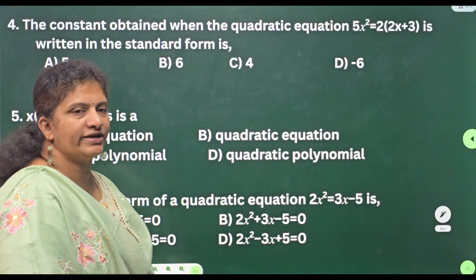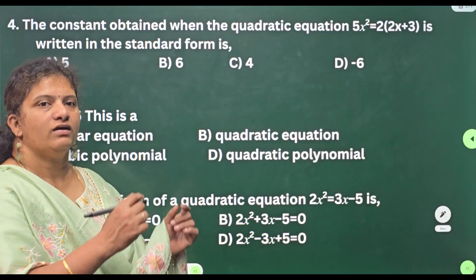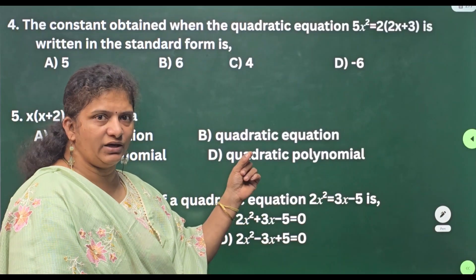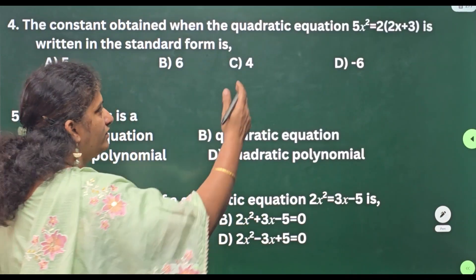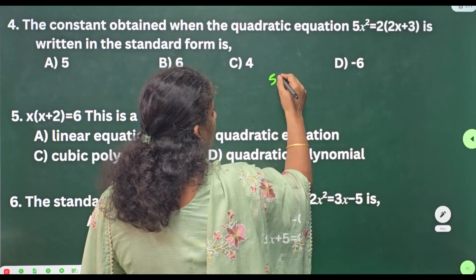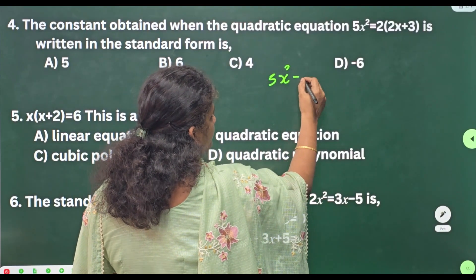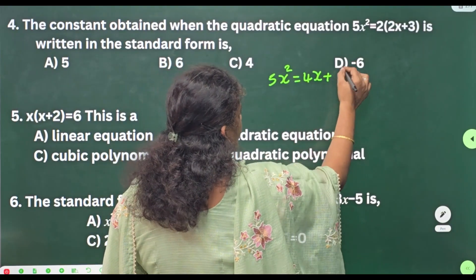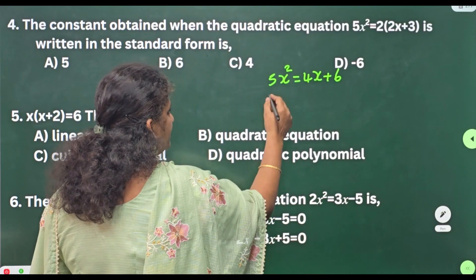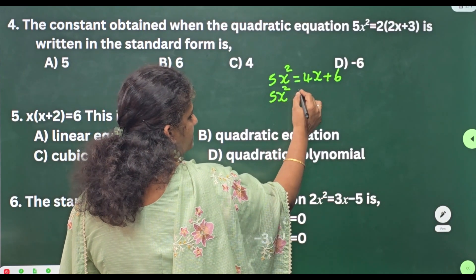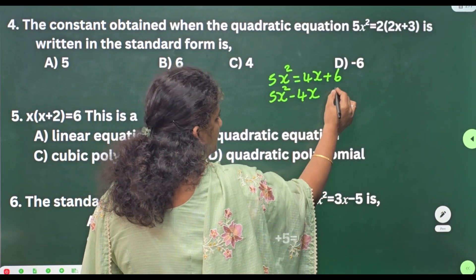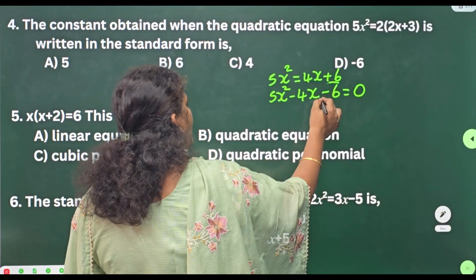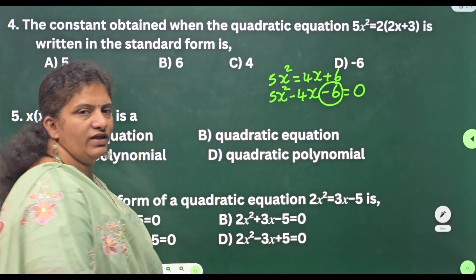Fourth one: the constant obtained when the quadratic equation 5x² = 2(2x + 3) is written in standard form — what is the value of the constant? Write the equation: 5x² = 2(2x) + 2(3), that is 4x + 6. Bring these terms to this side: 5x² − 4x − 6 = 0. Now −6 is the value of the constant.